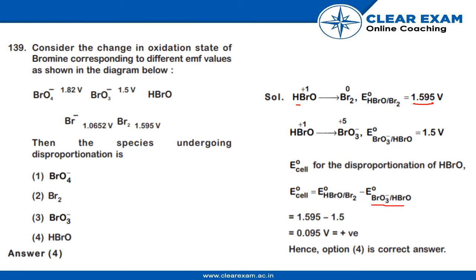Now we have the values given - 1.595V for BR2 and 1.5V for BrO3/HBRO. By equating the values we get 0.095V, which is positive. Hence option 4 is correct, which is HBRO.